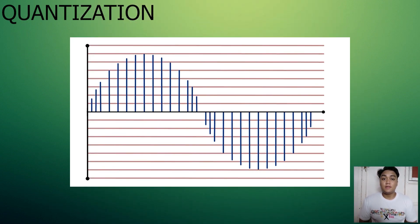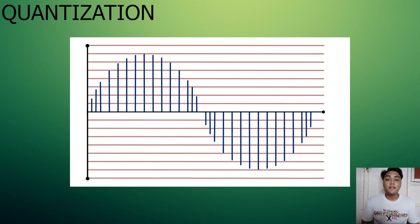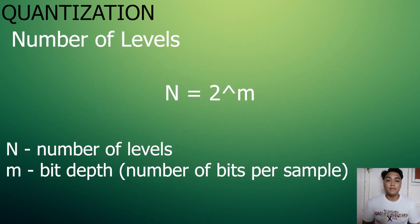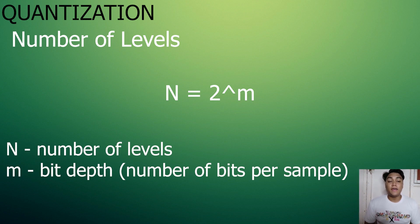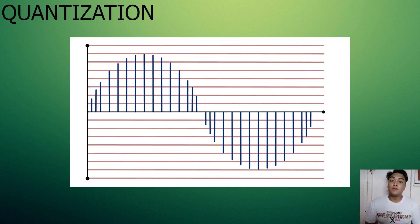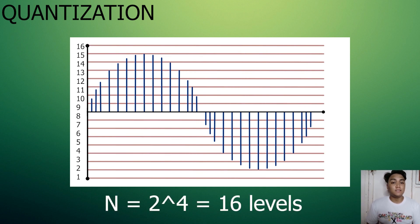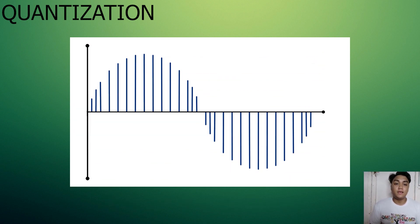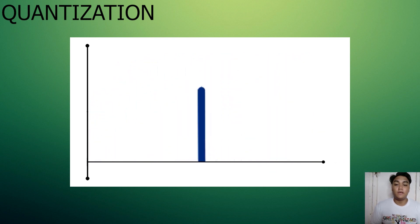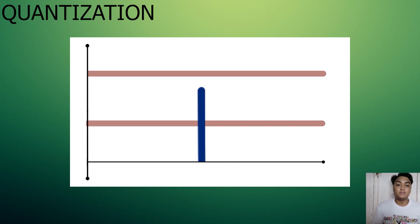The number of levels available depends on the number of bits used to express the sample value. The number of levels is given by n = 2 raised to m, where n is the number of levels and m is the bit depth. So for a bit depth of 4, we get 16 levels; for a bit depth of 8, we get 256 levels, and so on. Once the levels are determined, the sample values will be rounded off to the nearest available level — think of it as magnets attracted to the nearest piece of metal; the samples will snap or latch to the nearest levels.